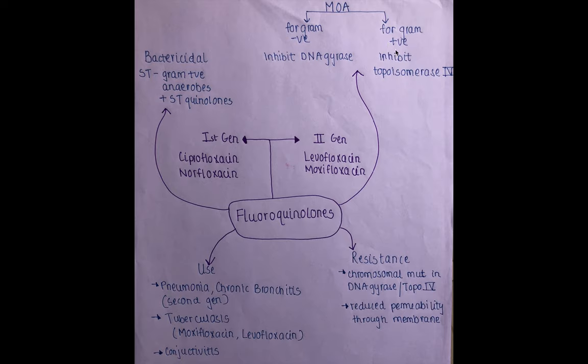For gram-positive bacteria, there is a similar enzyme called topoisomerase 4, which has a similar action to DNA gyrase. Fluoroquinolones inhibit topoisomerase 4, thereby inhibiting DNA synthesis and killing the bacteria.